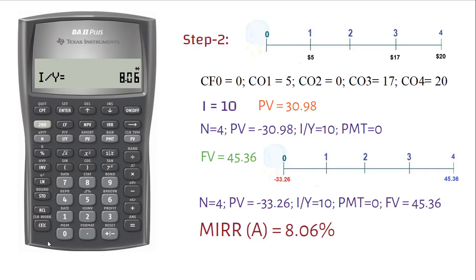Now, if you follow the same steps, you will get the MIRR for project B as 6.55%.